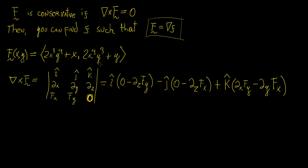We're going to go through an example in two dimensions and then one in three dimensions to see how we can do that. The first step is proving that the vector field is conservative. To do that, we calculate the curl, which we know is expressed as a 3×3 determinant.